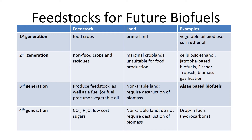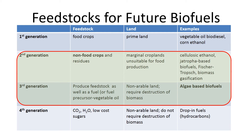To avoid the food versus fuel debate, we are keeping our focus on non-food crops such as miscanthus and switchgrass that can be grown on marginal land, and on crop residues such as corn stover for making third generation biofuels.